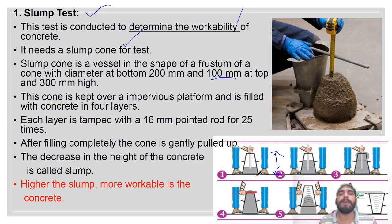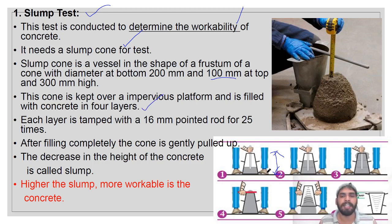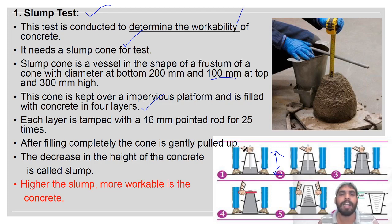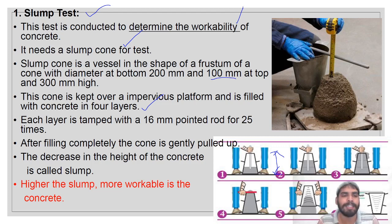The slump cone is filled in four layers. After filling each layer, it must be compacted using a 16 mm pointed rod, 25 times per layer, for all four layers.